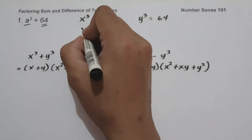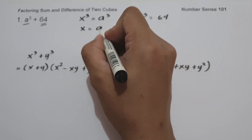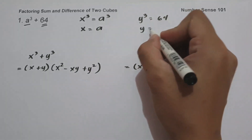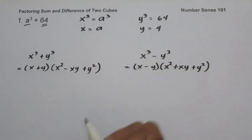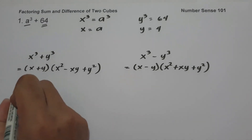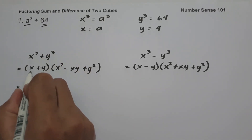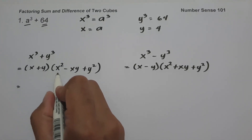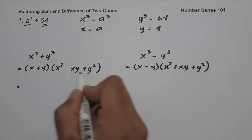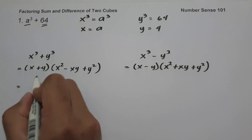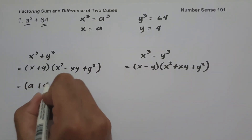To find the value of x, let us find the cube root of a³, and that is a. To find the value of y, that is the cube root of 64, and that is 4. So using x³ + y³ = (x + y)(x² − xy + y²), we have x + y, which is a + 4.